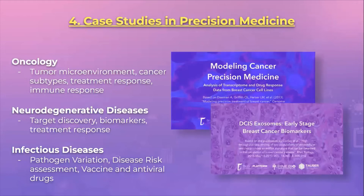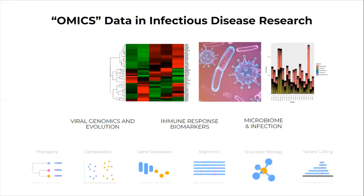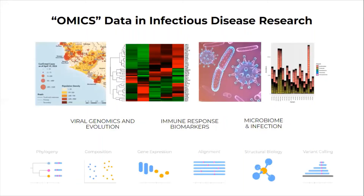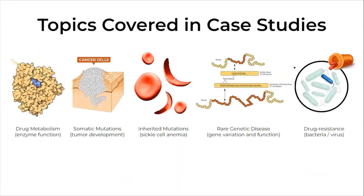After reviewing the rationale for bioinformatics and NGS in biomedical research and the clinic, we reviewed some case studies. For example, we discussed the spread of West African Ebola virus, SARS-CoV-2 genomes and cell responses, as well as how the microbiome is associated with disease and drug response. We also reviewed some example projects designed to illustrate how bioinformatics is used in real-world examples, from inherited mutations in sickle cell anemia to Mycobacterium tuberculosis.